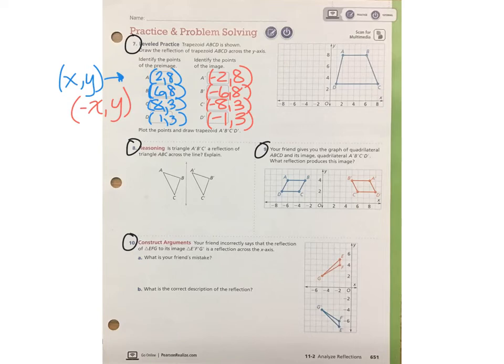Check your ordered pairs for question 7. Remember, the general rule states that if you're reflecting across the y-axis, then your x-coordinate is the opposite in order to keep it the same distance from the y-axis, but on the other side. Your y-coordinate does not change.